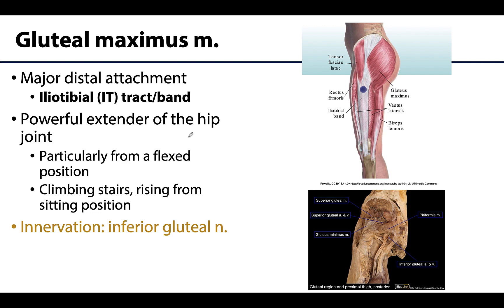Starting with the gluteus maximus, this muscle is no joke — it is the largest, heaviest, and most coarsely fibered muscle of the body. It is very difficult to reflect during dissection because of how coarsely fibered it is. It covers the other gluteal muscles and the deeper layer of muscles, except for the anterior superior portion of the gluteus medius.